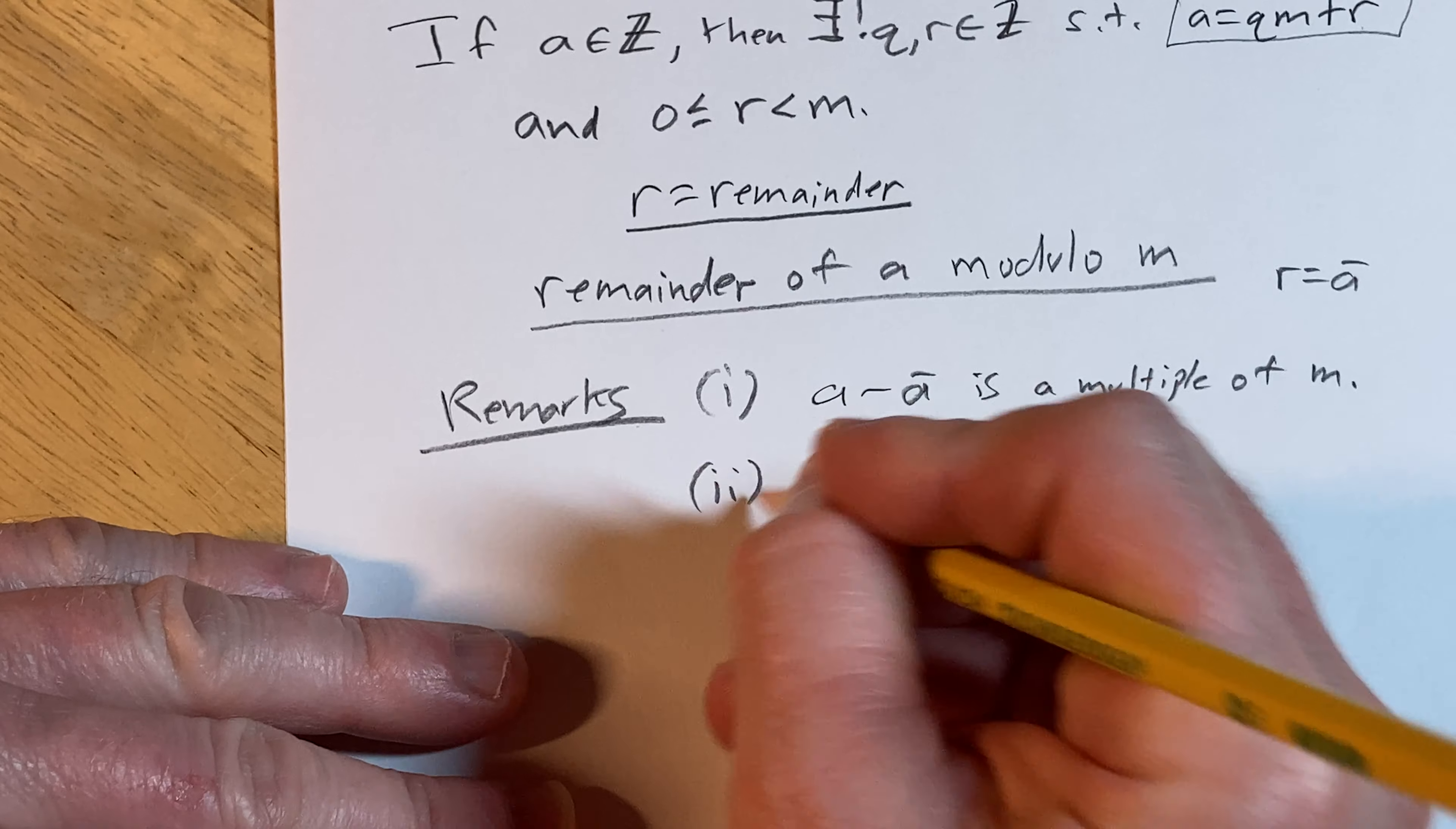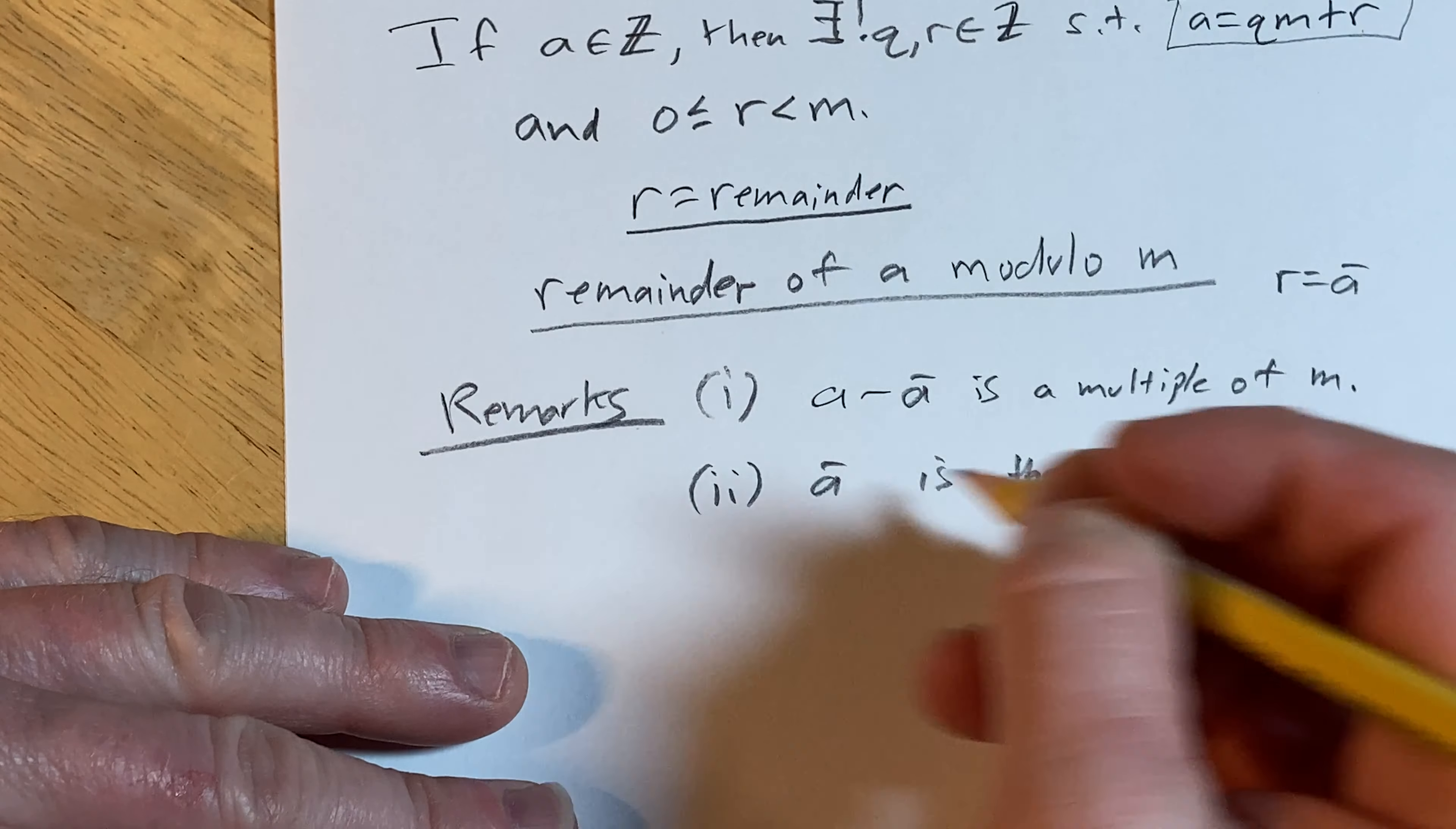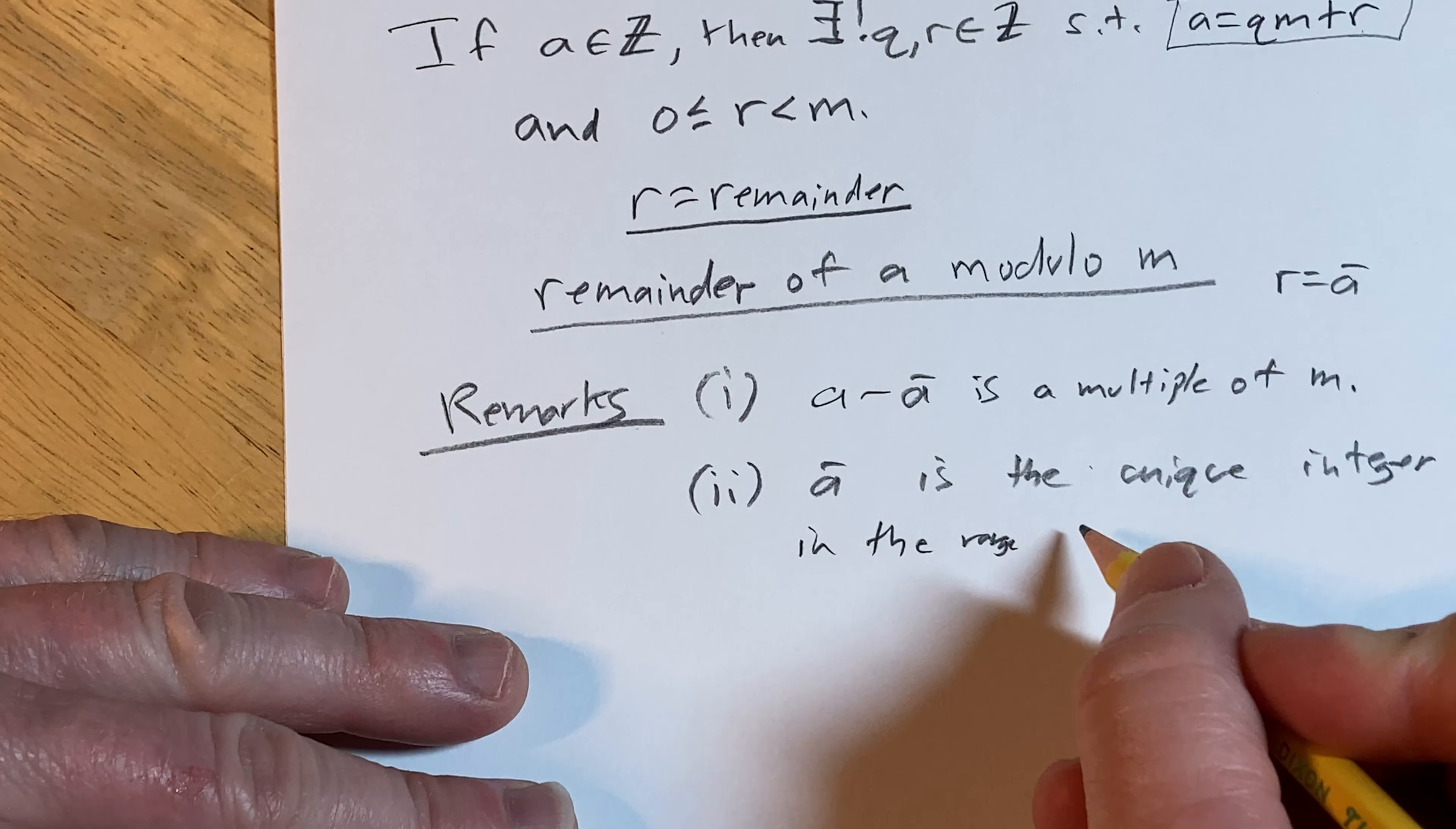And two, A bar is the unique integer in the range from 0 to M.